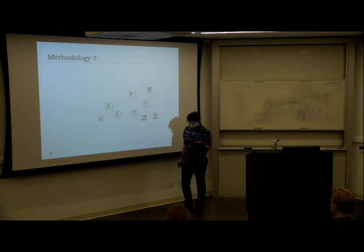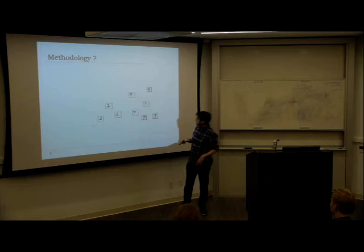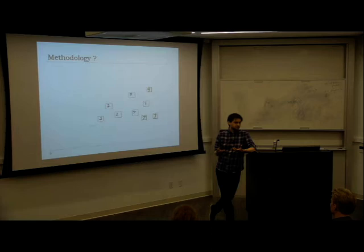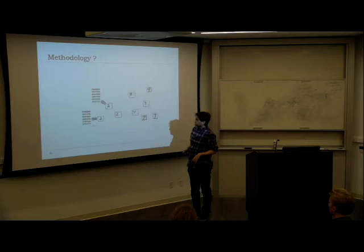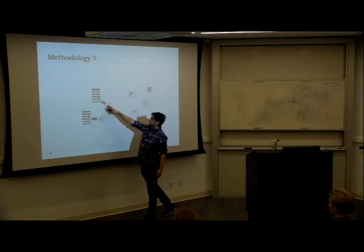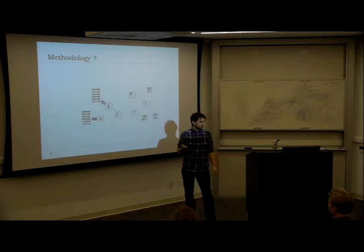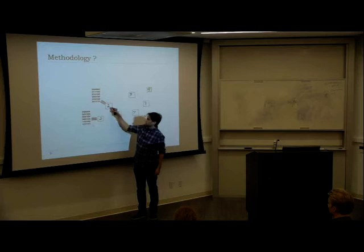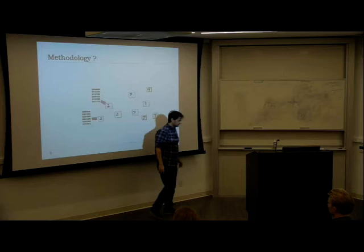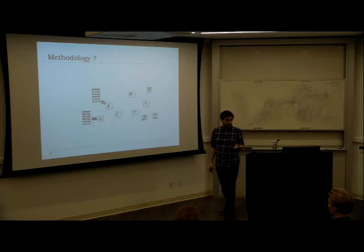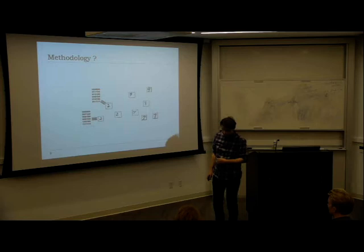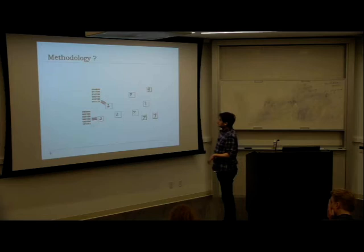Continuing the similarity search example: first we need to define how we compare images. For a 20x20 binary image, we represent it as a vector of 400 dimensions — one coordinate per pixel, 0 or 1. We can then compute the Hamming distance, the number of different coordinates, between two representations.